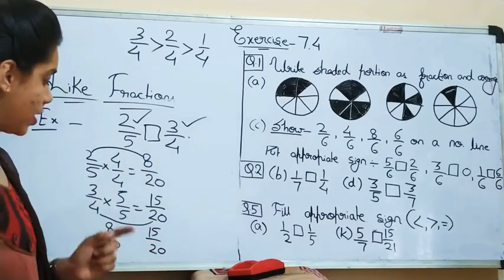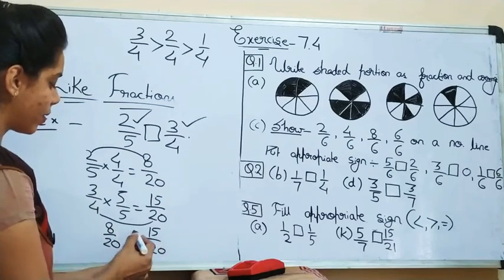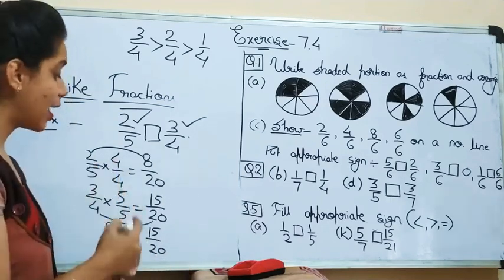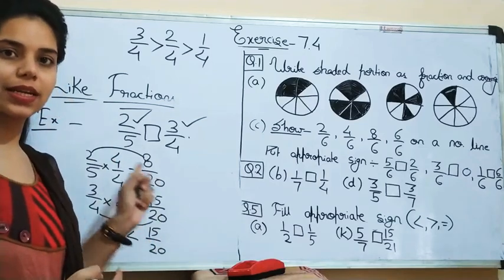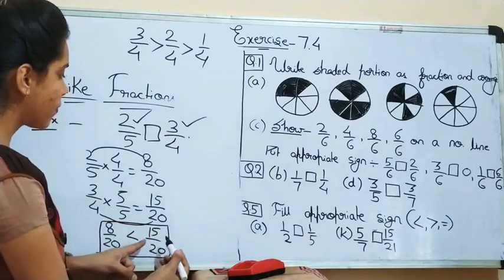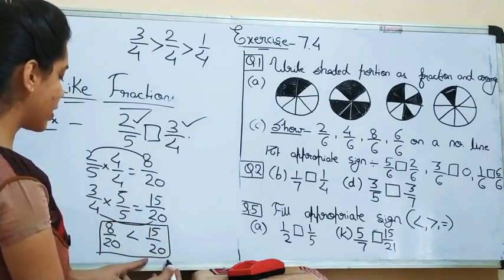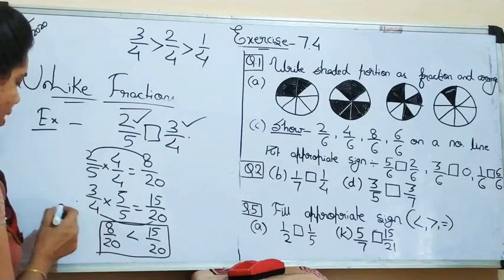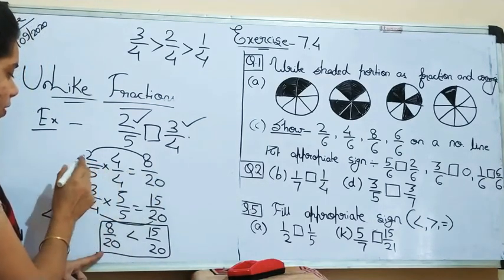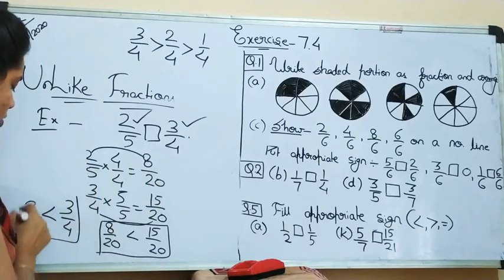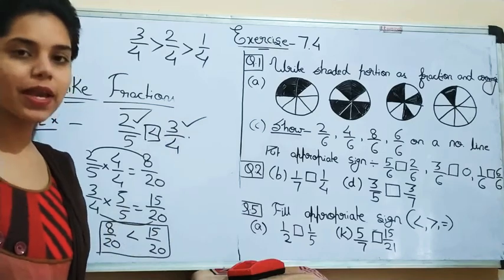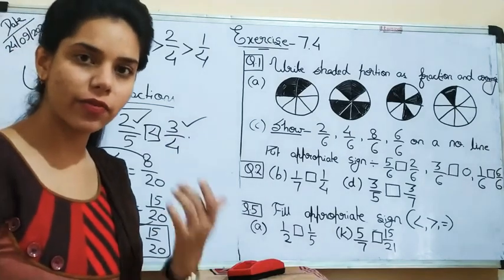Now they are like fractions. So 15 by 20 will be greater because their denominators are equal and we see the numerator — 15 is greater than 8. So this whole quantity is the greater one. 15 by 20 was the equivalent fraction of 3 by 4, and 8 by 20 was the equivalent fraction of 2 by 5. So 3 by 4 is the greater one. In this way, first find the equivalent fraction.